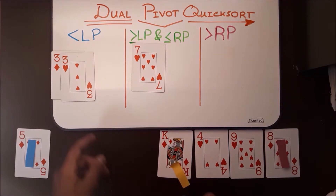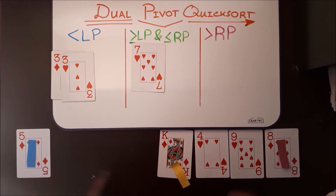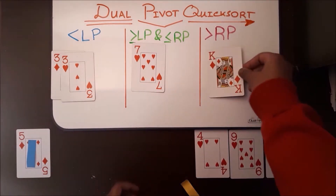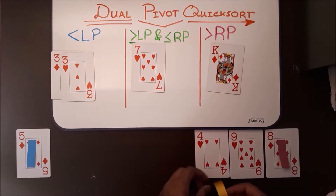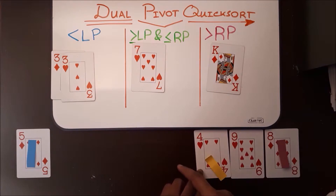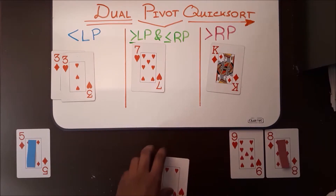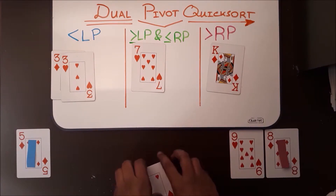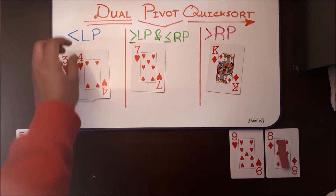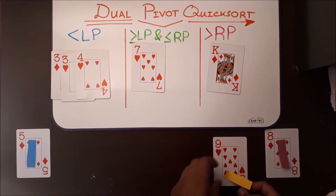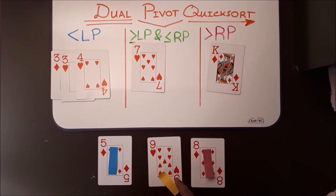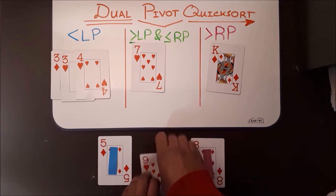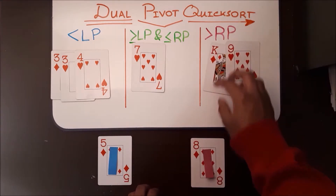King — is it less than five? No. Is it greater than eight? Yes. So this will go into this subarray. Four — is it less than five? Yes, so it'll go into our less than left pivot subarray. Nine, our last and final one — is it less than five? No. Is it greater than eight? Yes. So this will go in this subarray.